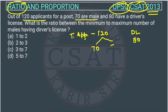The remaining will be female. So female is how many? 120 minus 70. Now, what is the ratio? The question is asking the ratio between the minimum to maximum number of males having a driving license.